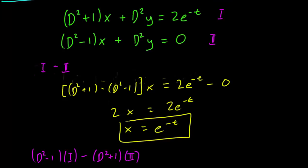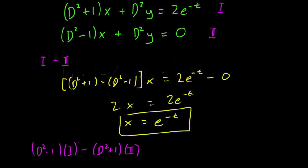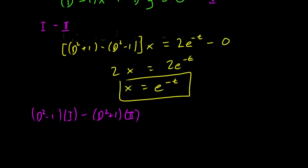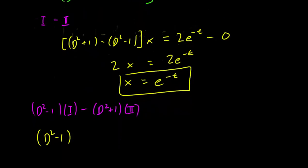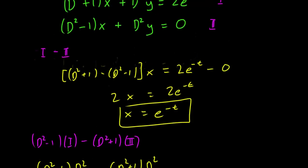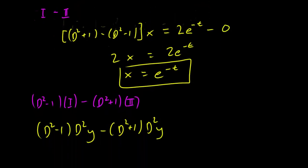And what do we get? The x terms cancel, and we just get D squared minus 1 times, let's see, D squared for a y, D squared y minus D squared plus 1 times D squared, because there's D squared in the second equation too, times y equals...